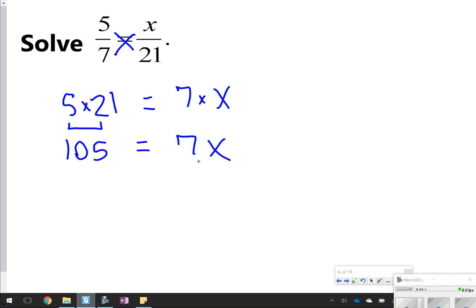My next step would be to divide to isolate the variable. So I'm going to divide both sides by 7, so that x is equal to whatever 105 divided by 7 is. When I divide 105 by 7, I get 15. So x is equal to 15.